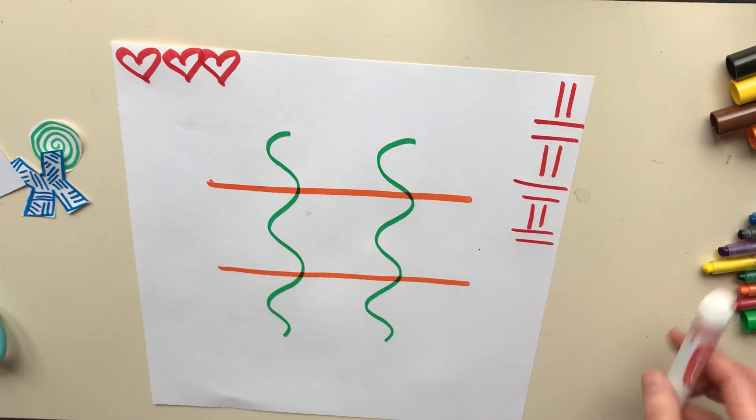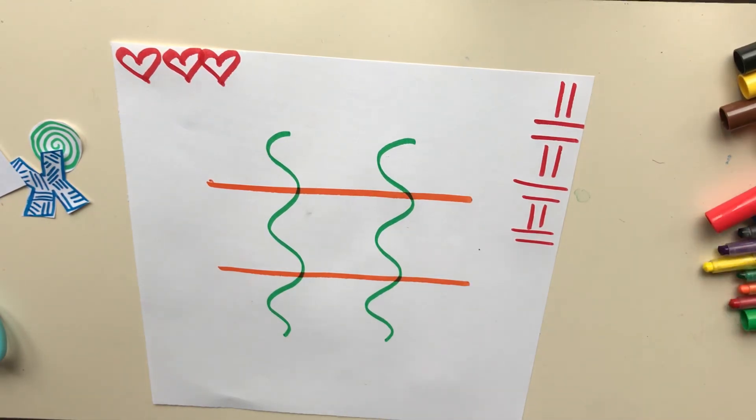You could color it in, you could make swirls, anything that you can think of. Sunflowers, rainbows, trees, whatever you can imagine.